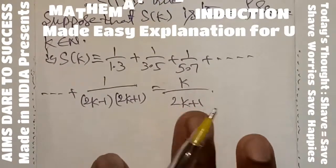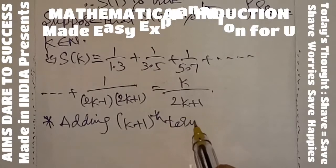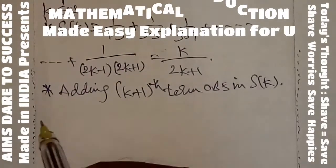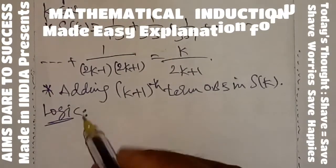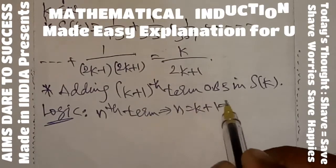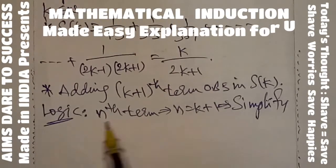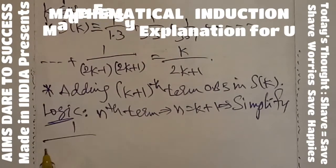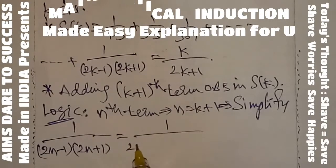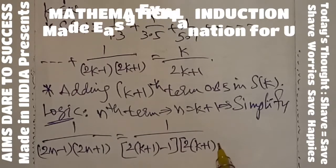After getting S(k), one important step is adding the (k+1)th term on both sides of S(k). To get the (k+1)th term, take the nth term for the given question and substitute n = k+1 and simplify. The nth term is 1/((2n−1)(2n+1)). Substituting n = k+1 gives 1/((2(k+1)−1)(2(k+1)+1)).